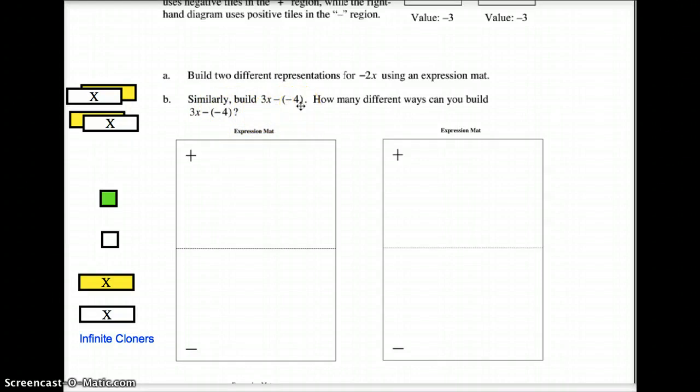Build three x minus negative four. Okay? Well, probably the easiest way of doing this, we have positive three x. How can we represent that? We have a positive one x here. We have a positive two x here. And now we have a positive three x.